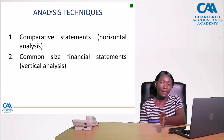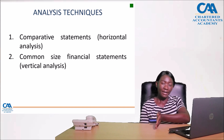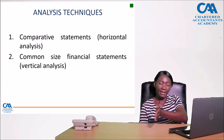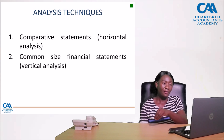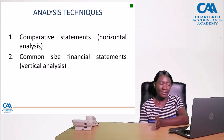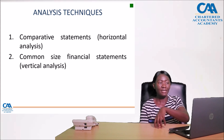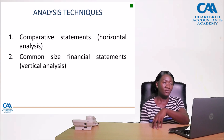For example, under non-current assets, I have PPE and intangible assets; under current assets, I have inventory and trade receivables. If I express inventory as a percentage of total current assets, that is an example of vertical analysis — a line item expressed as a percentage of a base figure within the statement.